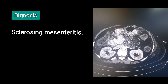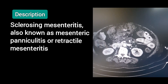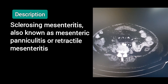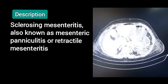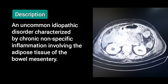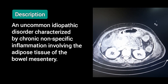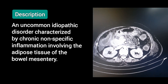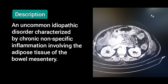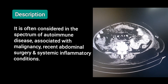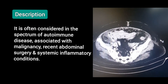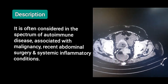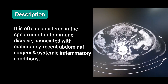The diagnosis is sclerosing mesenteritis. Sclerosing mesenteritis, also known as mesenteric panniculitis or retractile mesenteritis, is an uncommon idiopathic disorder characterized by chronic non-specific inflammation involving the adipose tissue of the bowel mesentery. It is often considered in the spectrum of autoimmune disease, associated with malignancy, recent abdominal surgery, and systemic inflammatory conditions.